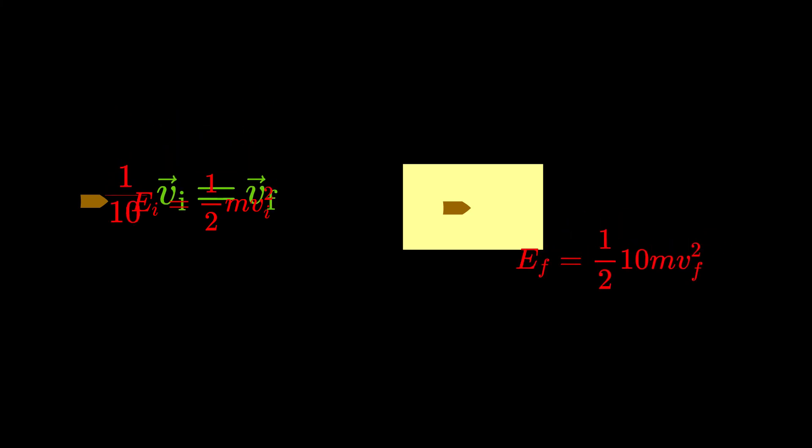We know that the final velocity of the whole object is one tenth of the initial velocity. So we can plug that in and by some simple algebra we get this equation. We see here that this is the expression for the initial kinetic energy of the projectile. So the final equation looks like this.